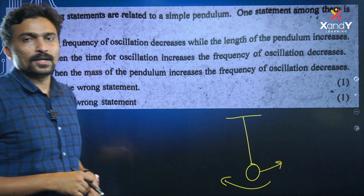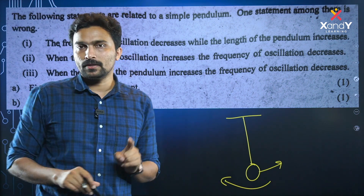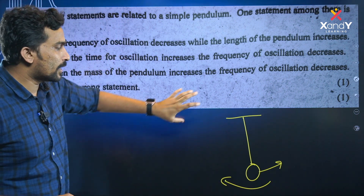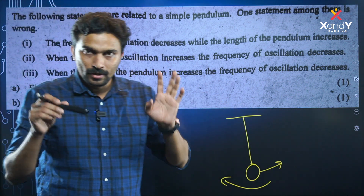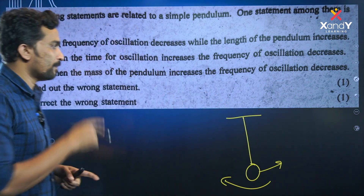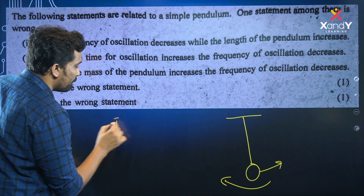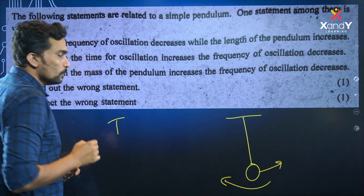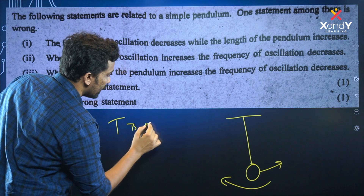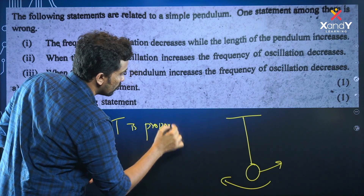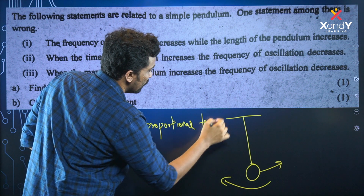The frequency is the number of oscillations in one second. Time period is the time taken to complete one full oscillation.